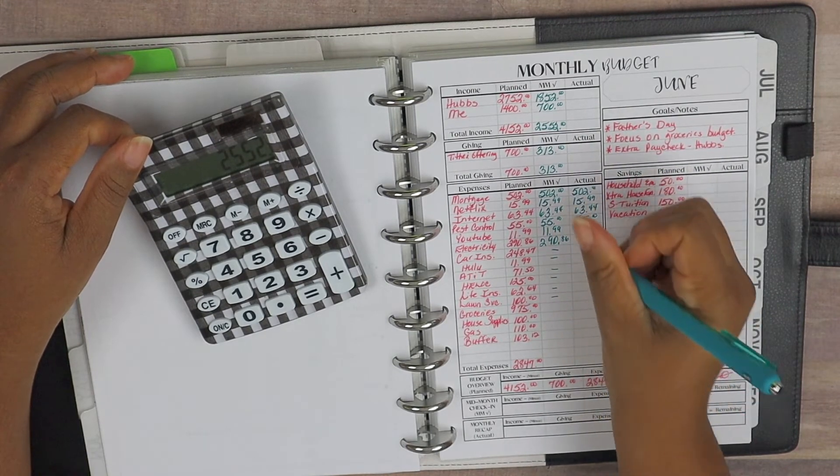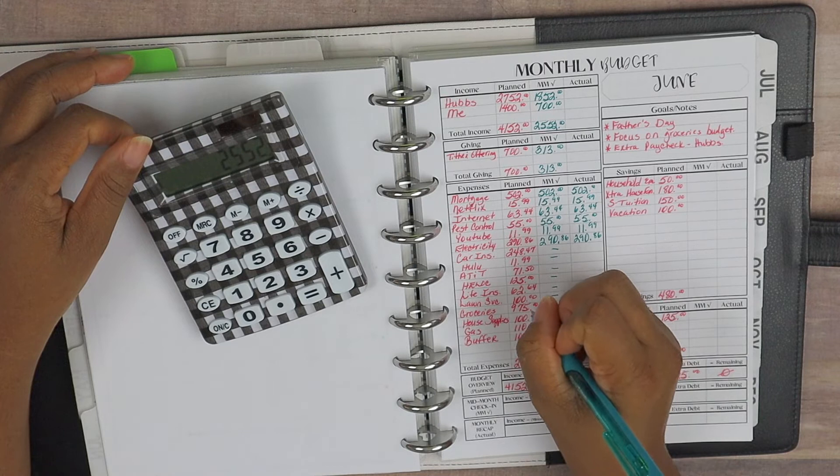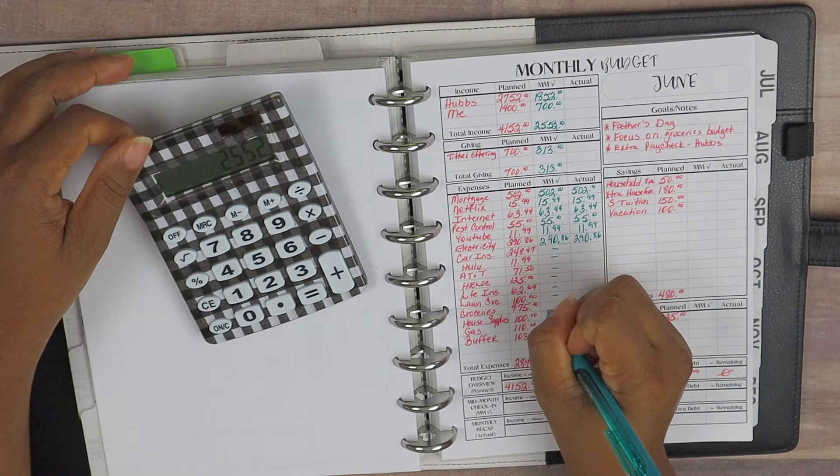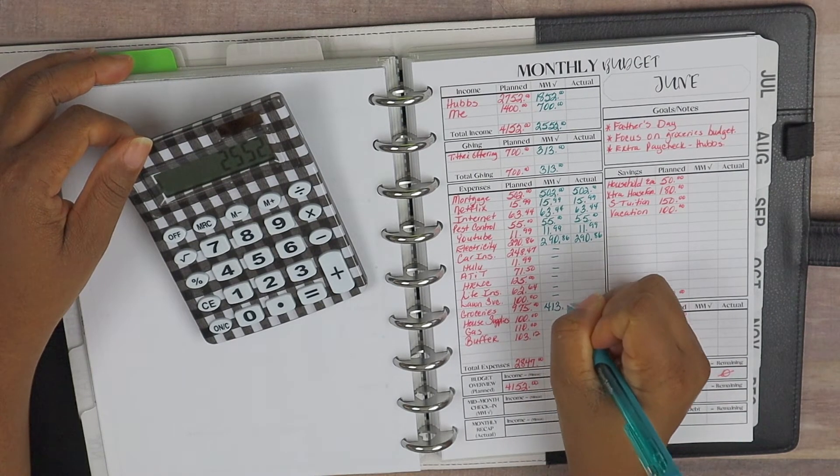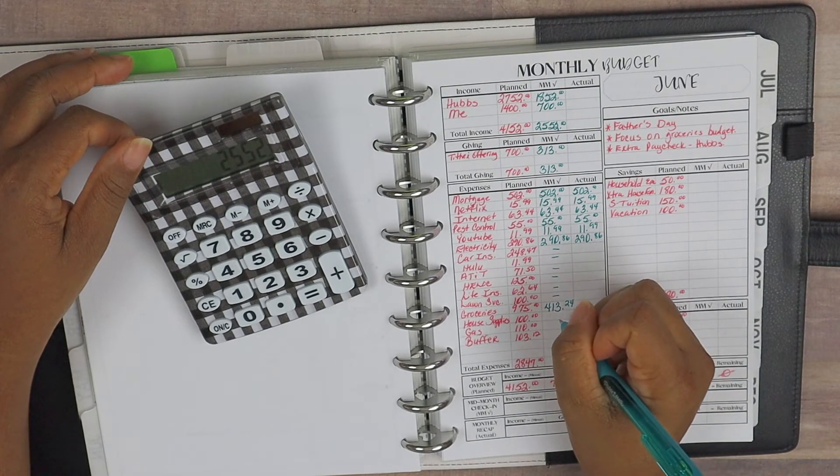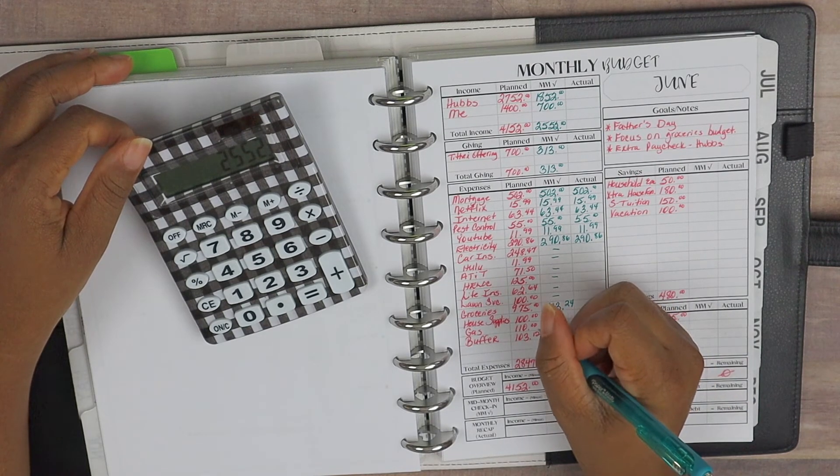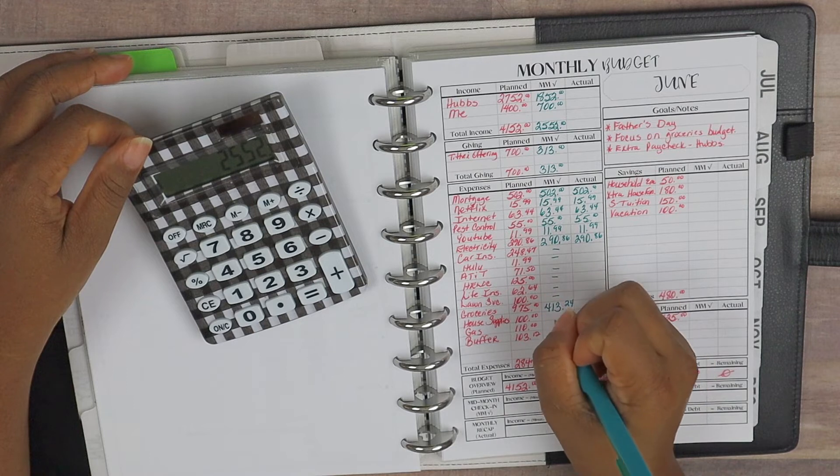All right, and then for our groceries, so thus far we have spent $413.24, so we're looking pretty good thus far.